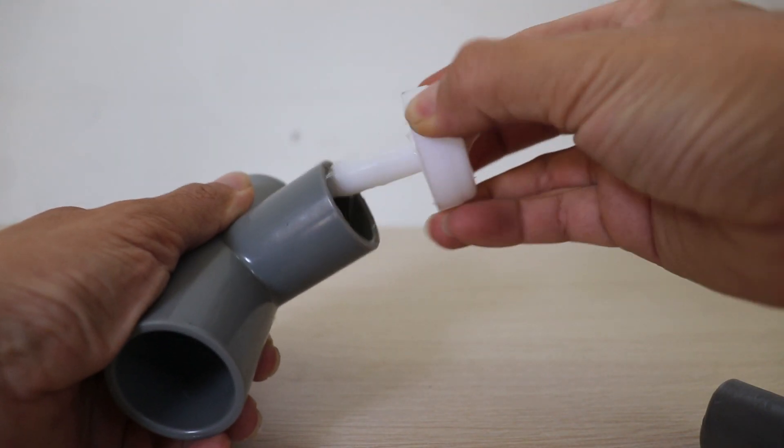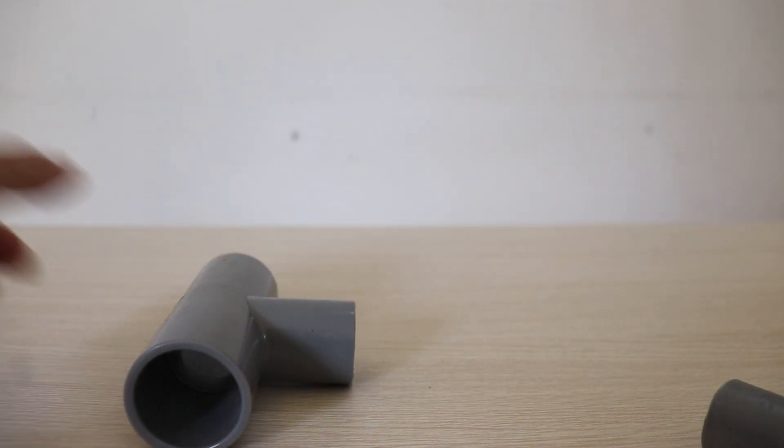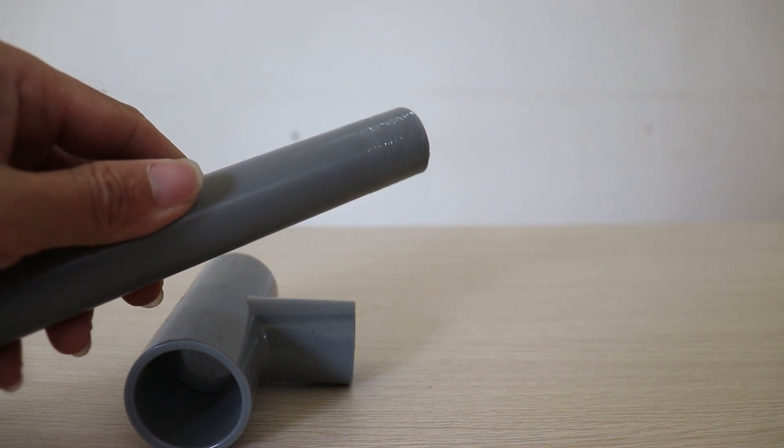Second, apply the adhesive evenly to the pipe at the bonding position. Applying glue evenly to all contact positions helps the connection to be complete and secure.